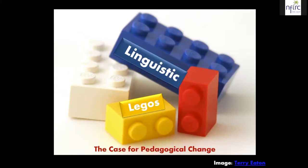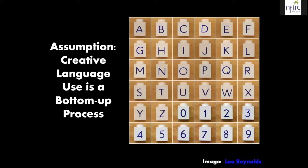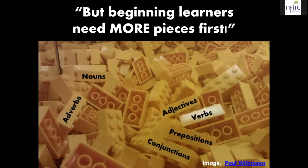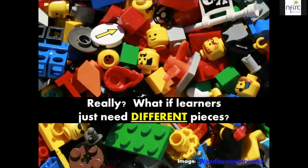We're going to be playing with the idea of Legos today. A lot of teachers make the assumption that creative language use is what in academia we might call a bottom-up process — meaning you start with individual components of language at the most basic level, individual letters, and that students combine those letters to form words, and combine those words to eventually form communicative utterances. The argument from many teachers is that beginning learners need more pieces first — they don't have enough grammar and vocabulary.